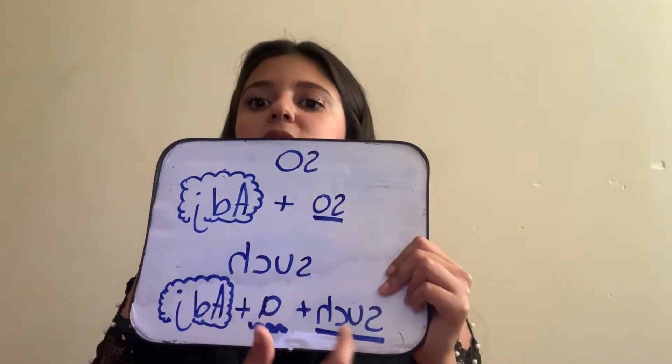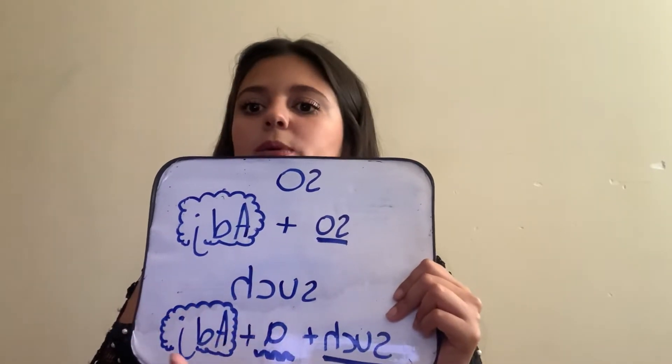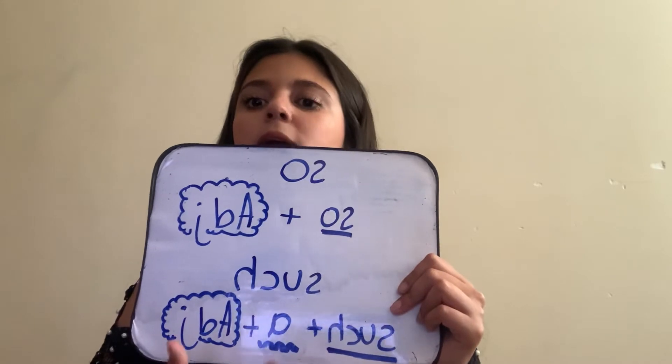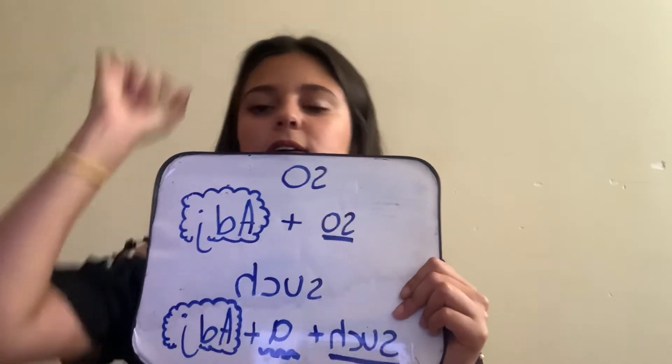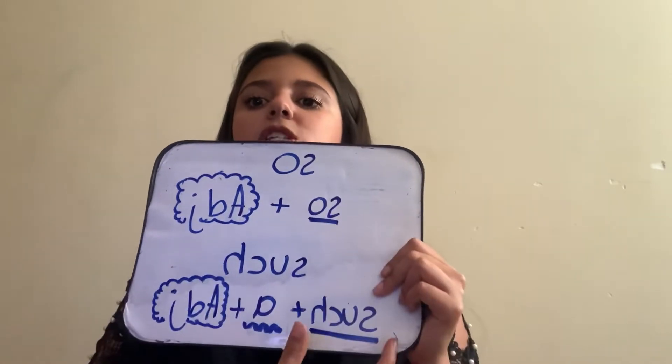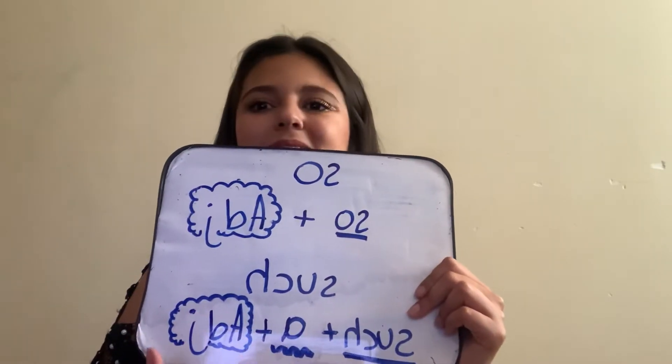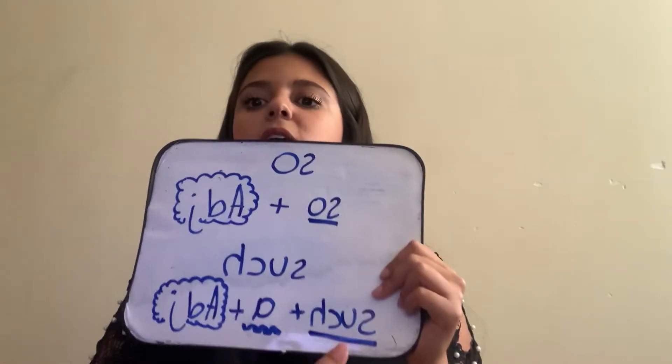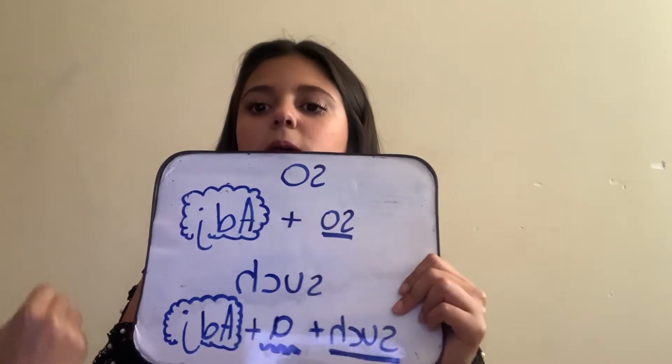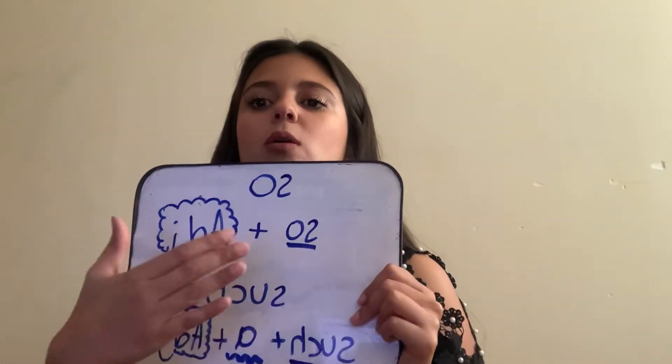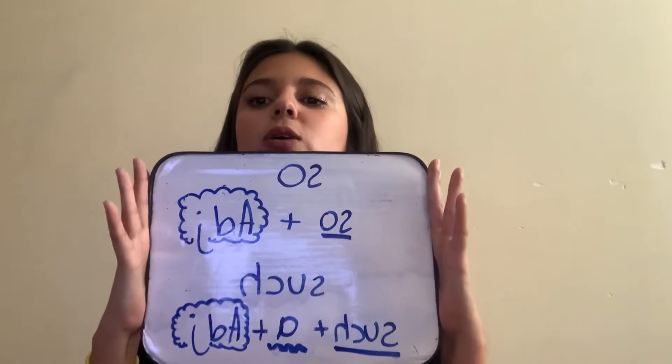When we use the word such, we use this article. Always, always, always, always, always. Because this article will be the extra word that it's going to give it, the click for such, okay. Such a good girl. Such a bad day. Such a great pet. Okay, I'm going to give you a little bit more examples right now, but this is the most, the main idea, what I want you guys to learn.